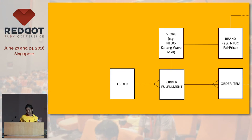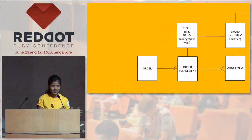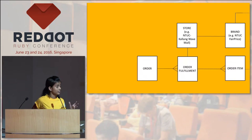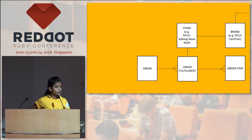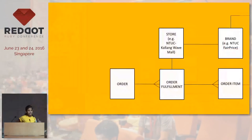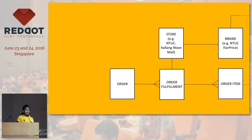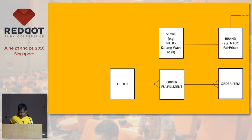A very quick introduction of our database so you understand how the tests look later. We have orders that come in, and they belong to many different stores. One order can have sub-orders, which we call order fulfillments. Each of them has stores that are basically outlets of a particular brand, and then you have the brand. There are products and so on — that's how the database looks.